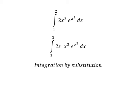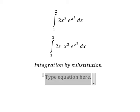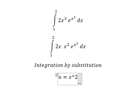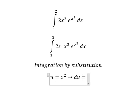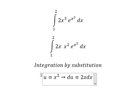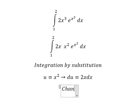I will set u equal to s squared. Then we take the first derivative of both sides and we get du equals 2s ds.